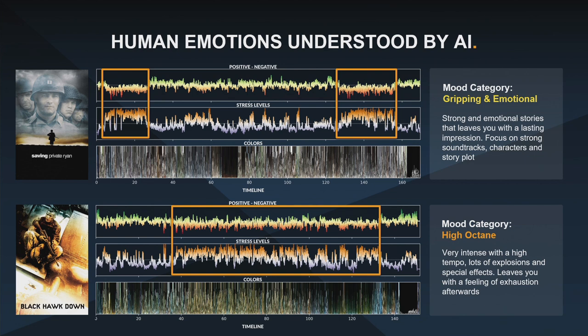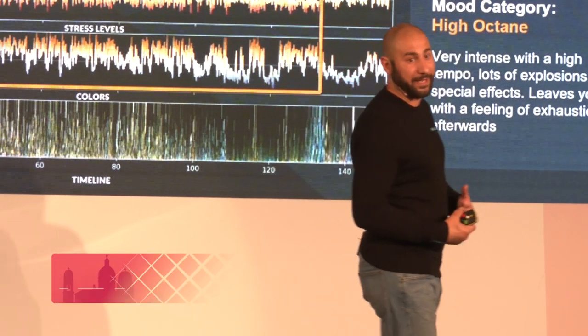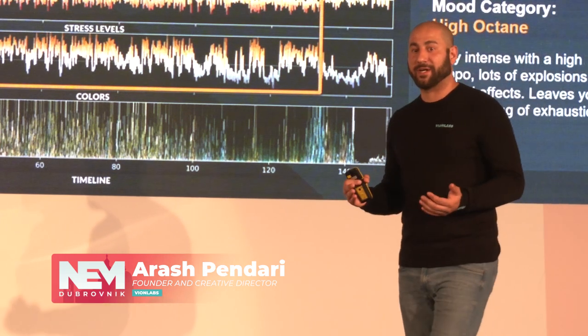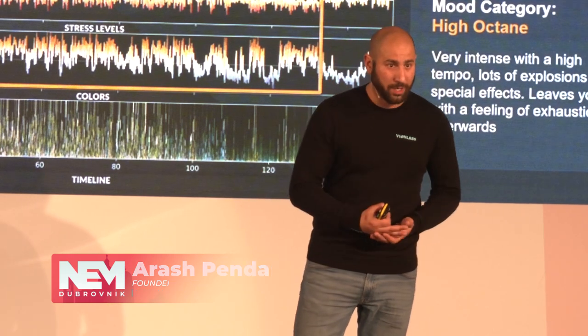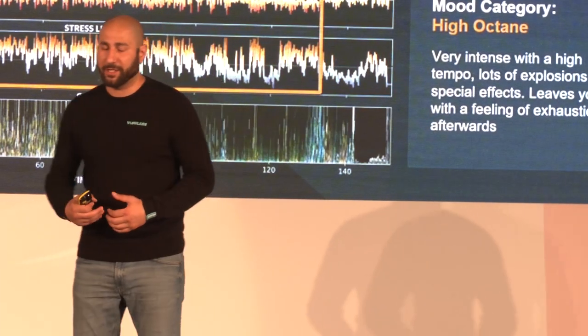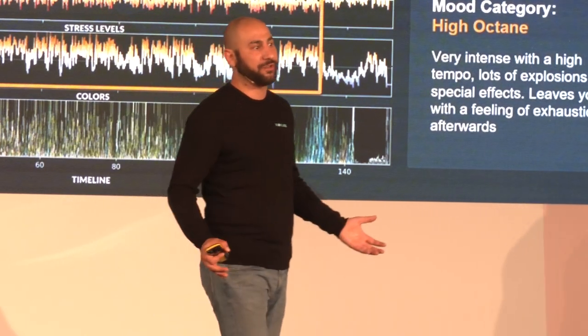If you look at these graphs, on the top you see the positive and negative emotions of how we as humans would perceive this movie emotionally. In the middle, we can see the stress levels of Saving Private Ryan and Black Hawk Down. These movies are very close to each other in the data — they're both about war and include soldiers — but if you look at the emotional structure, they're telling totally two different stories.